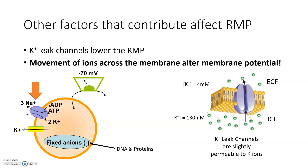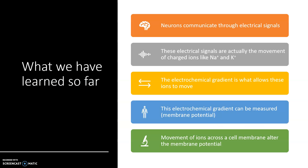Let's review what we've learned so far. First, neurons communicate through electrical signals. Second, the electrical signals are actually the movement of charged ions like sodium and potassium. Third, the electrochemical gradient — the unequal distribution of these ions — is what allows these ions to move. Fourth, the electrochemical gradient can be measured; it's what we call the membrane potential. Lastly, the movement of ions across a cell membrane can alter the membrane potential.